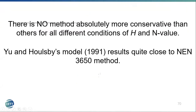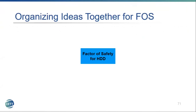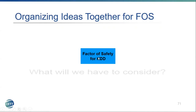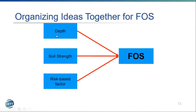For the factor of safety framework for HDD, two main things need to be considered: how close to the surface the borehole is and how strong the soil is, and what the consequence of failure is — related to risk. The factor of safety would relate to depth H, soil strength expressed as N-value, and a risk-based factor from the risk assessment.